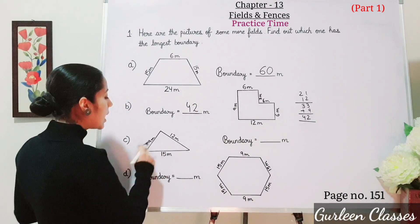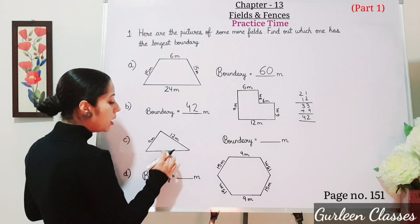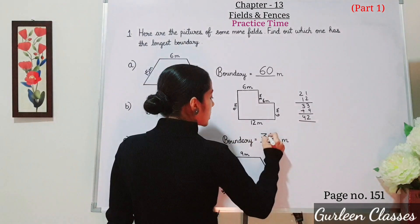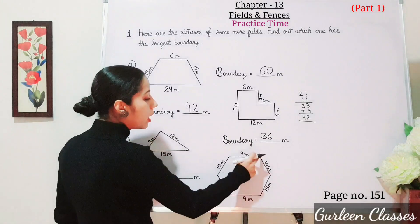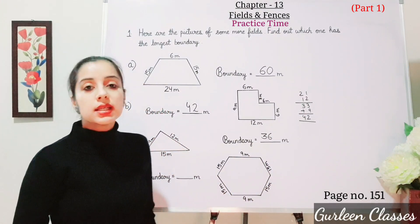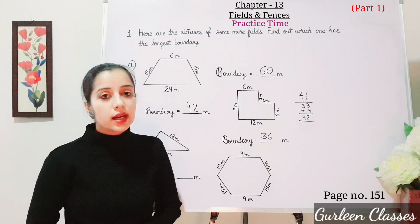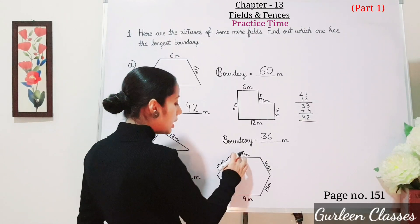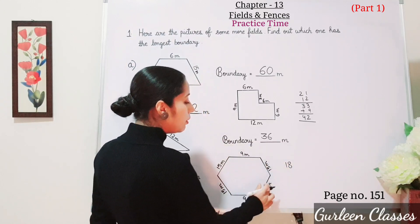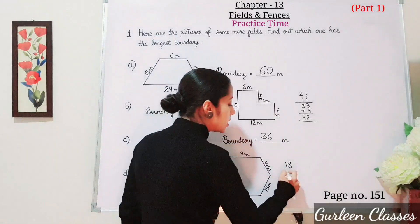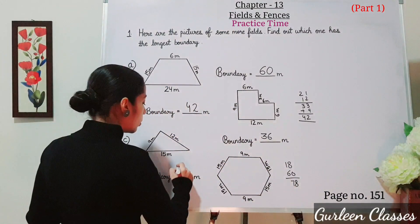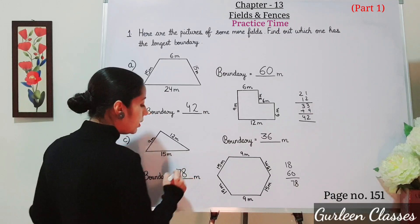Part C: let us add the triangle's sides. 12 plus 15 is 27, plus 9 is 36 metres. Part D: this figure has 6 sides — a hexagon. Adding: 9 plus 9 is 18, plus 15 plus 15 is 30, plus 15 plus 15 is 30 — total is 78 metres. So the length of the boundary is 78 metres.